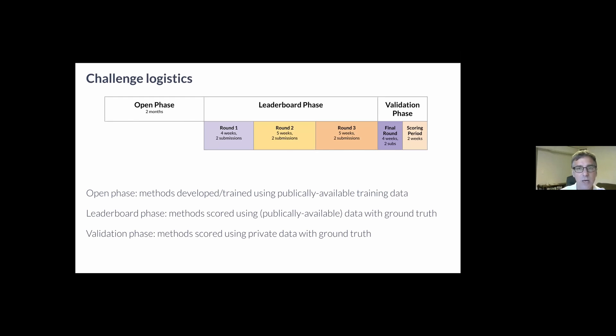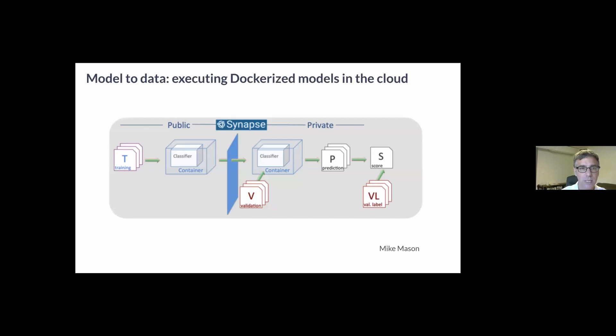This is amenable to correlation metrics and that's what we used to evaluate them. Pearson correlation is our primary metric and Spearman is our secondary metric in case of ties. Our challenge consisted of three phases. In the first open phase, methods were trained on publicly available transcriptomic profiles.